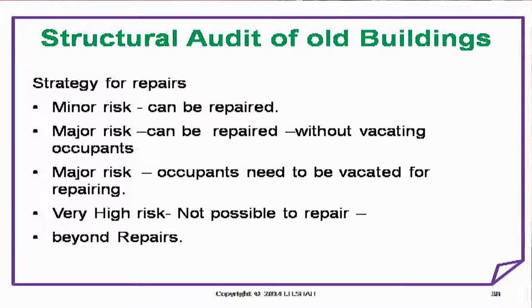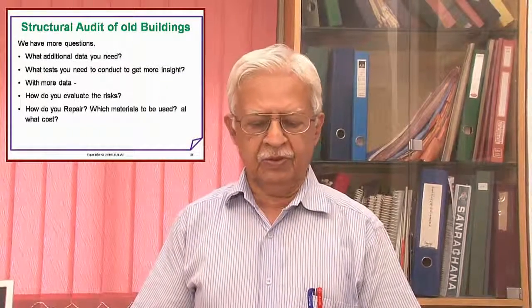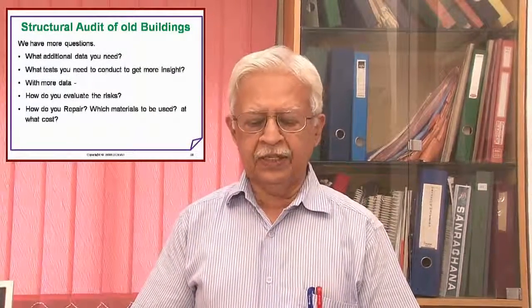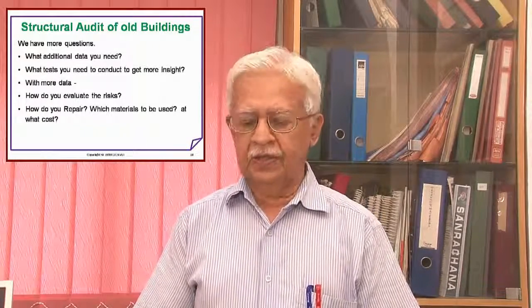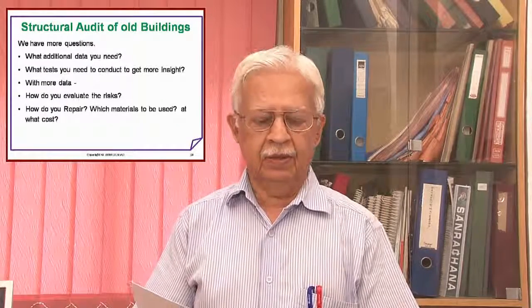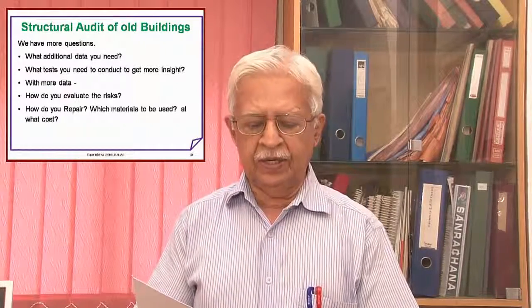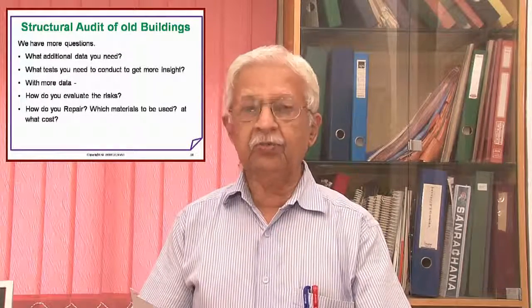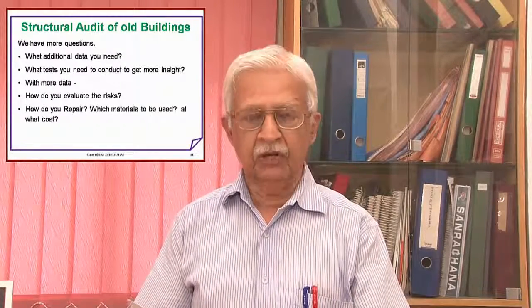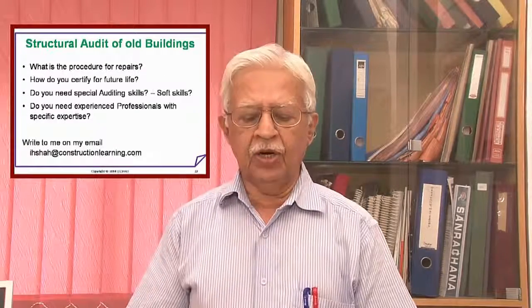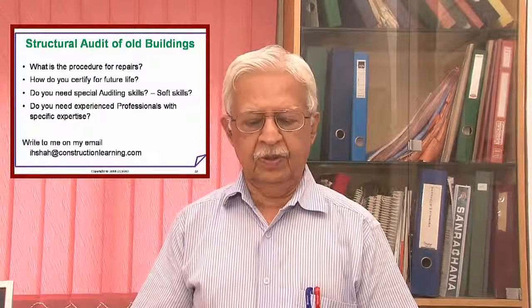Once you evaluate the risk, how do you plan your strategy for repairs? Minor risk can be repaired. Major risk can be repaired without vacating occupants. Major risk where occupants need to be vacated for repairing. Very high risk — not possible for repairs, beyond repairs. What additional data do you need, what tests do you need to conduct to get more insight? With more data, how do you evaluate the risk, how do you repair, which materials to be used, and at what cost?